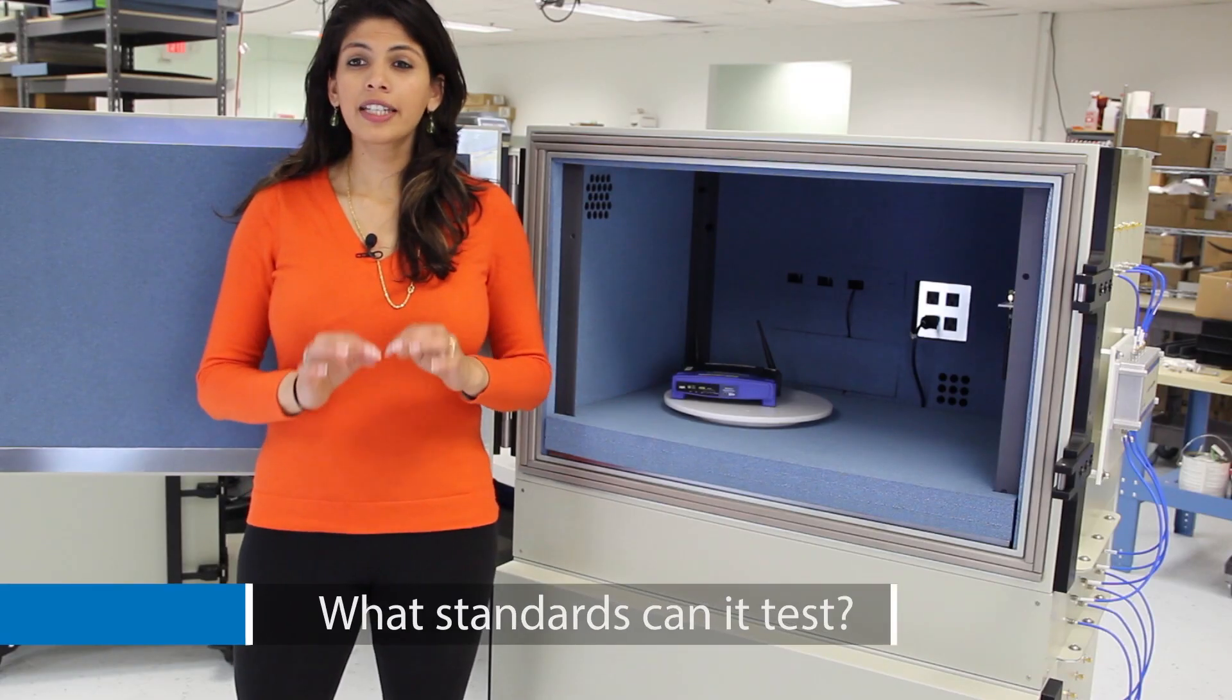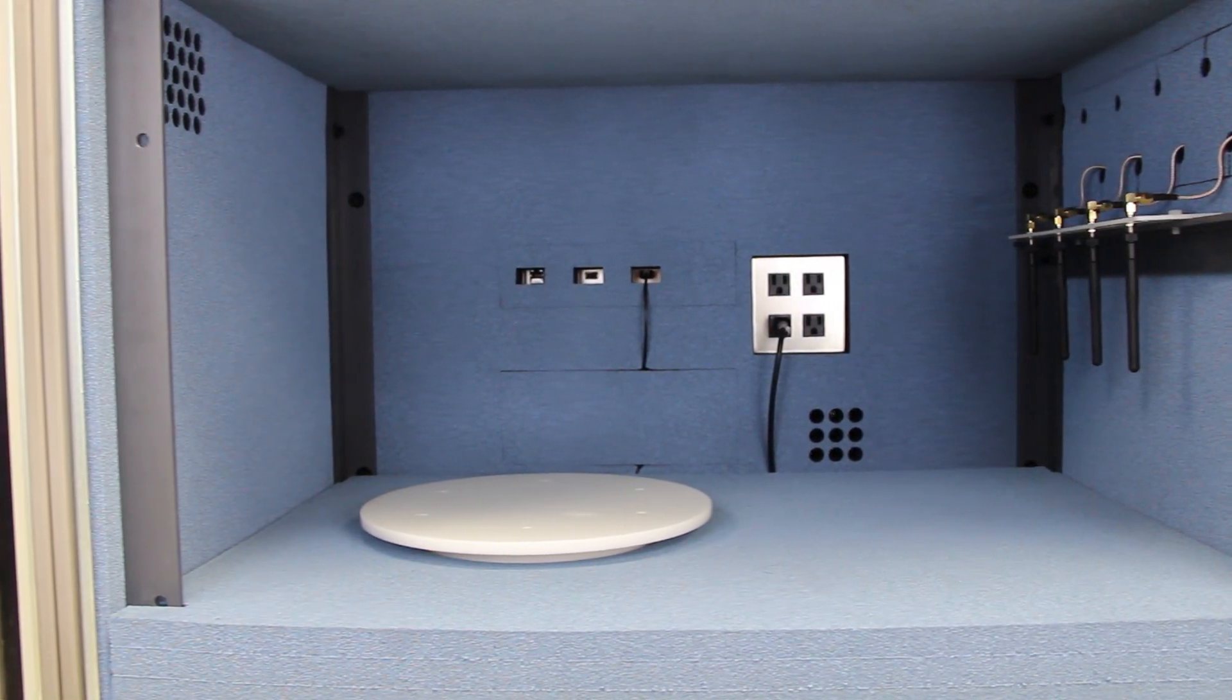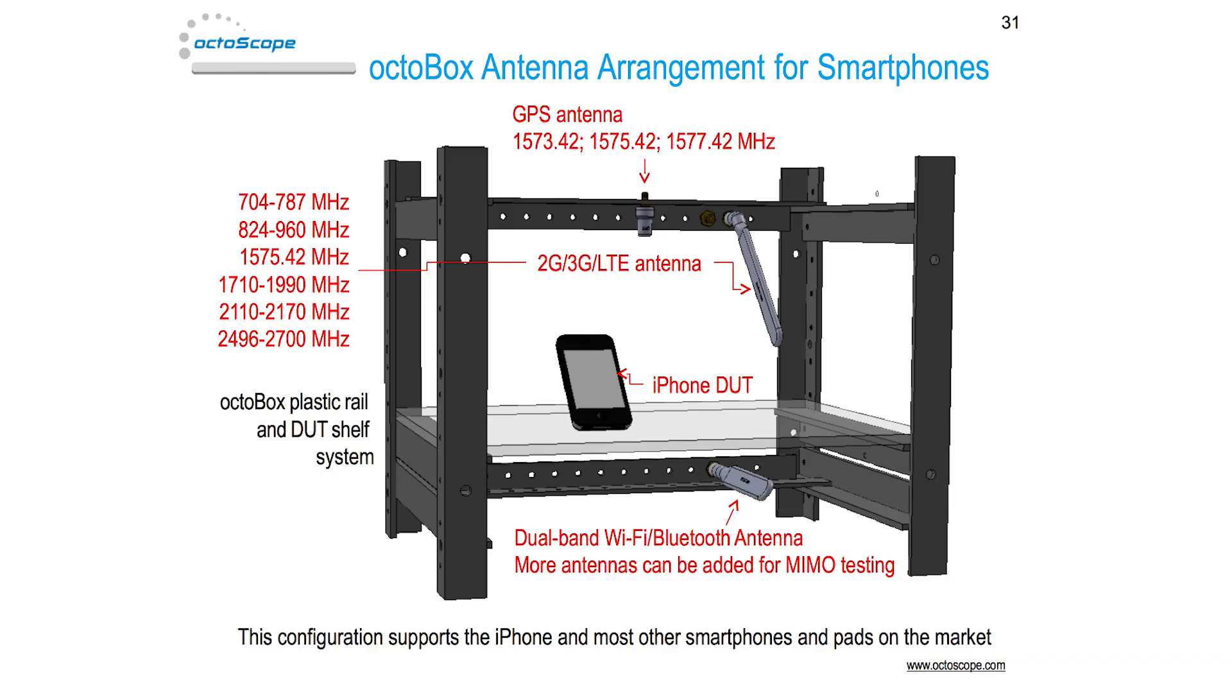The Octabox can be used for testing Wi-Fi, 2G, 3G, 4G, GPS, and other such devices. It offers ideal conditions for multi-stream MIMO and supports the operating frequencies from 700 MHz all the way up to 6 GHz.